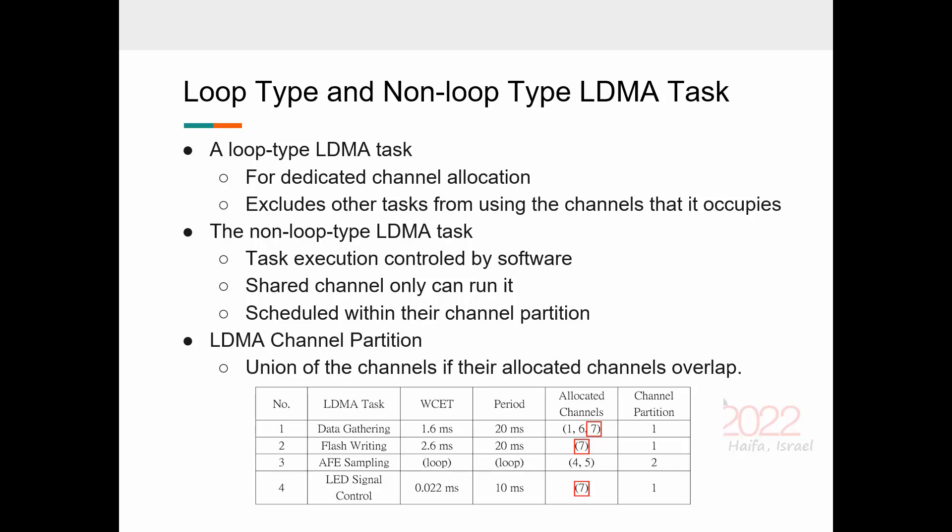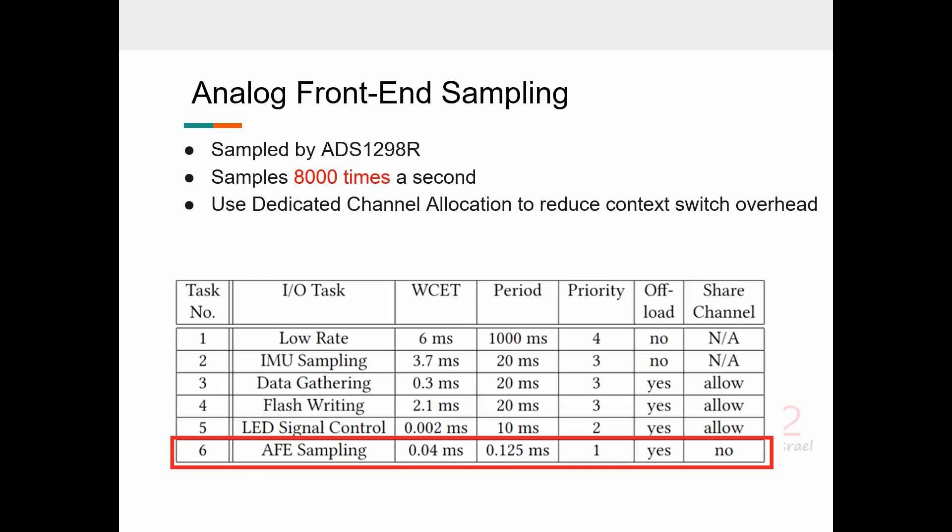After discussing the loop type and non-loop type LDMA task, the question now is, which tasks should be allocated dedicated, and which should be shared LDMA channels? The AFE sampling device is the ADS1298R by Texas Instruments, which contains the analog front end and eight simultaneous 24-bit differential pair analog to digital converters. The AFE sampling task is the most demanding, as it is invoked 8000 times a second, and is a prime candidate for offloading onto LDMA. Because of the high sampling rate, we offload it by the dedicated allocation to reduce the context switch overhead.